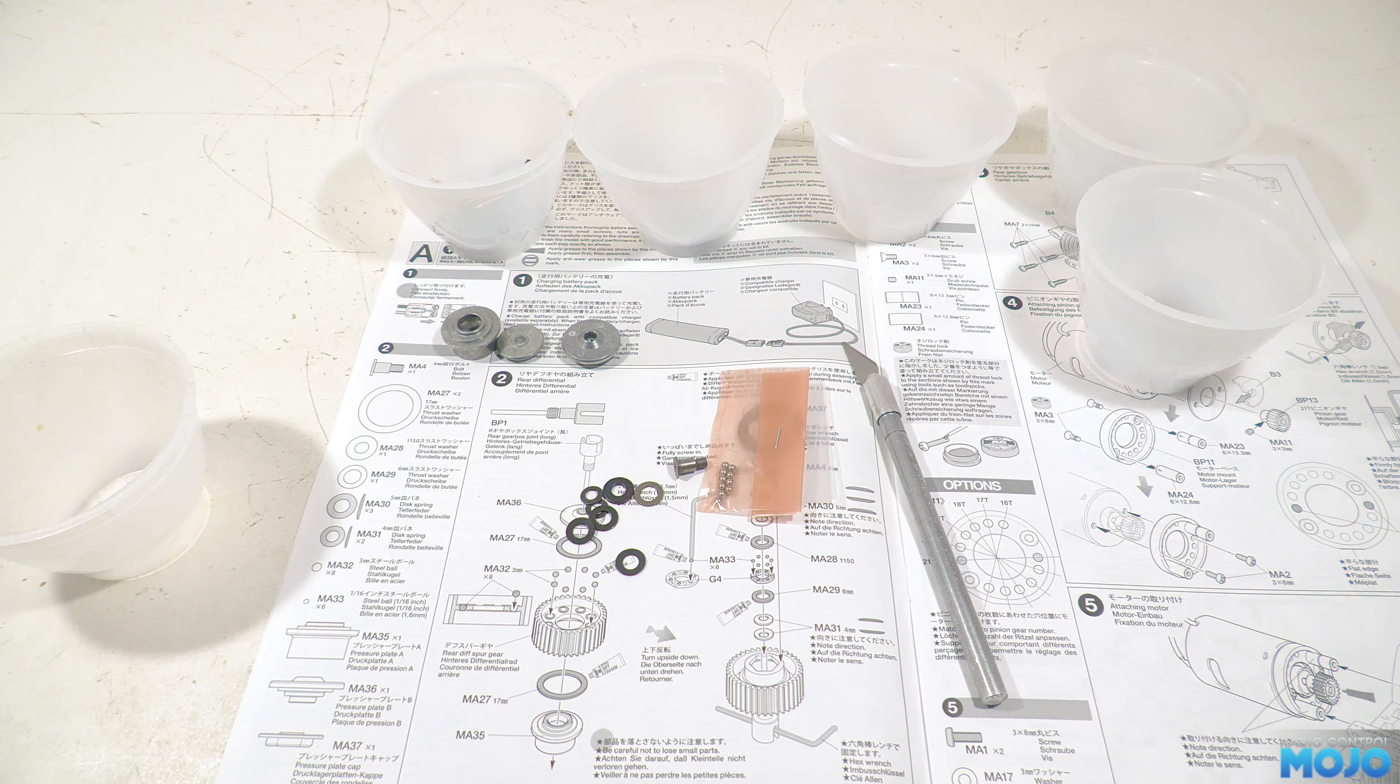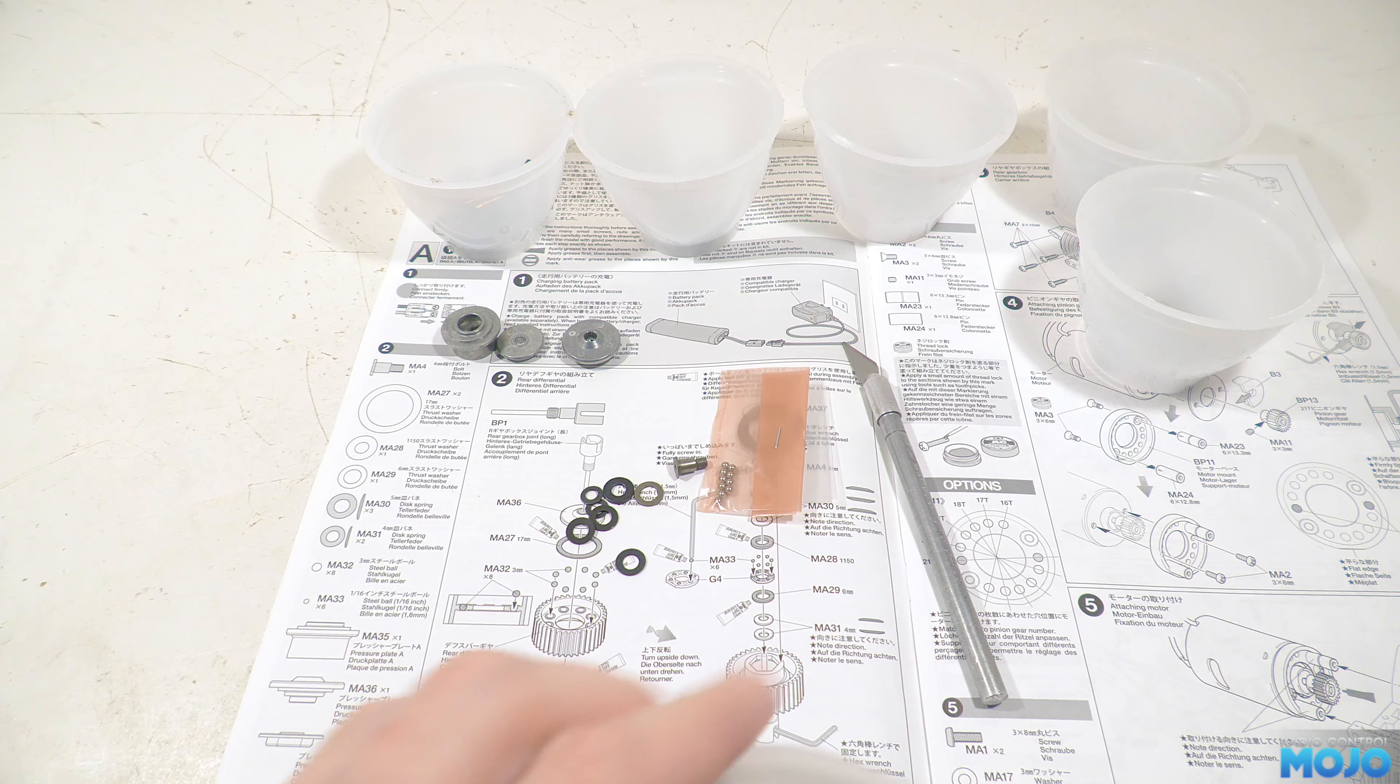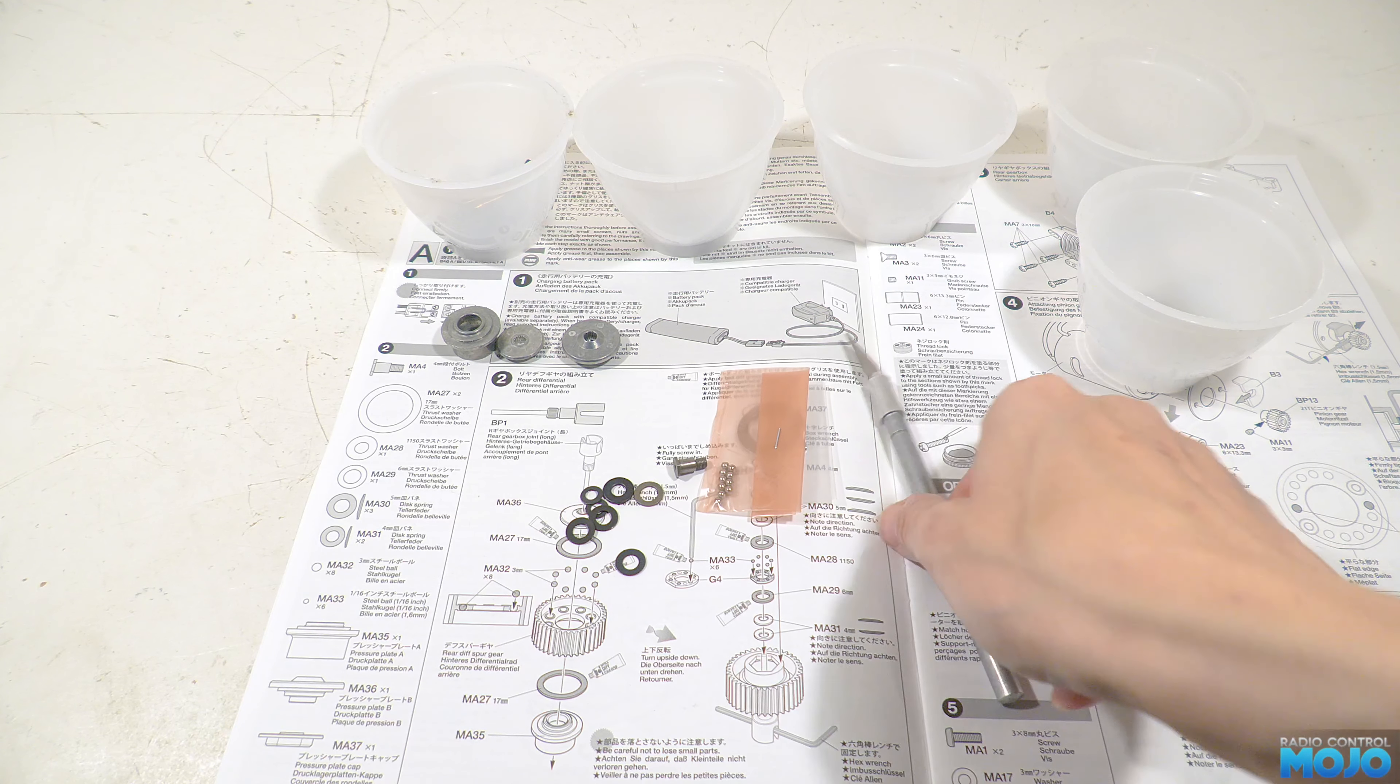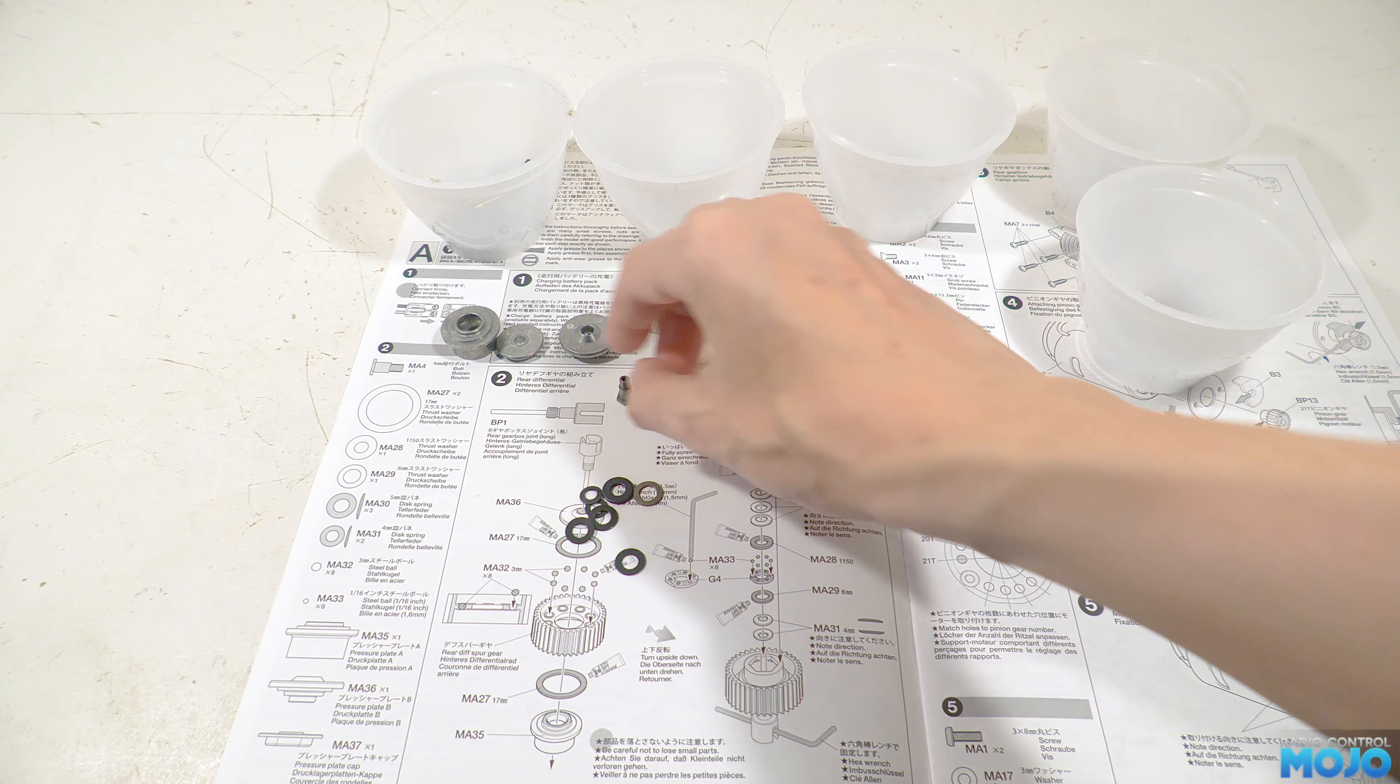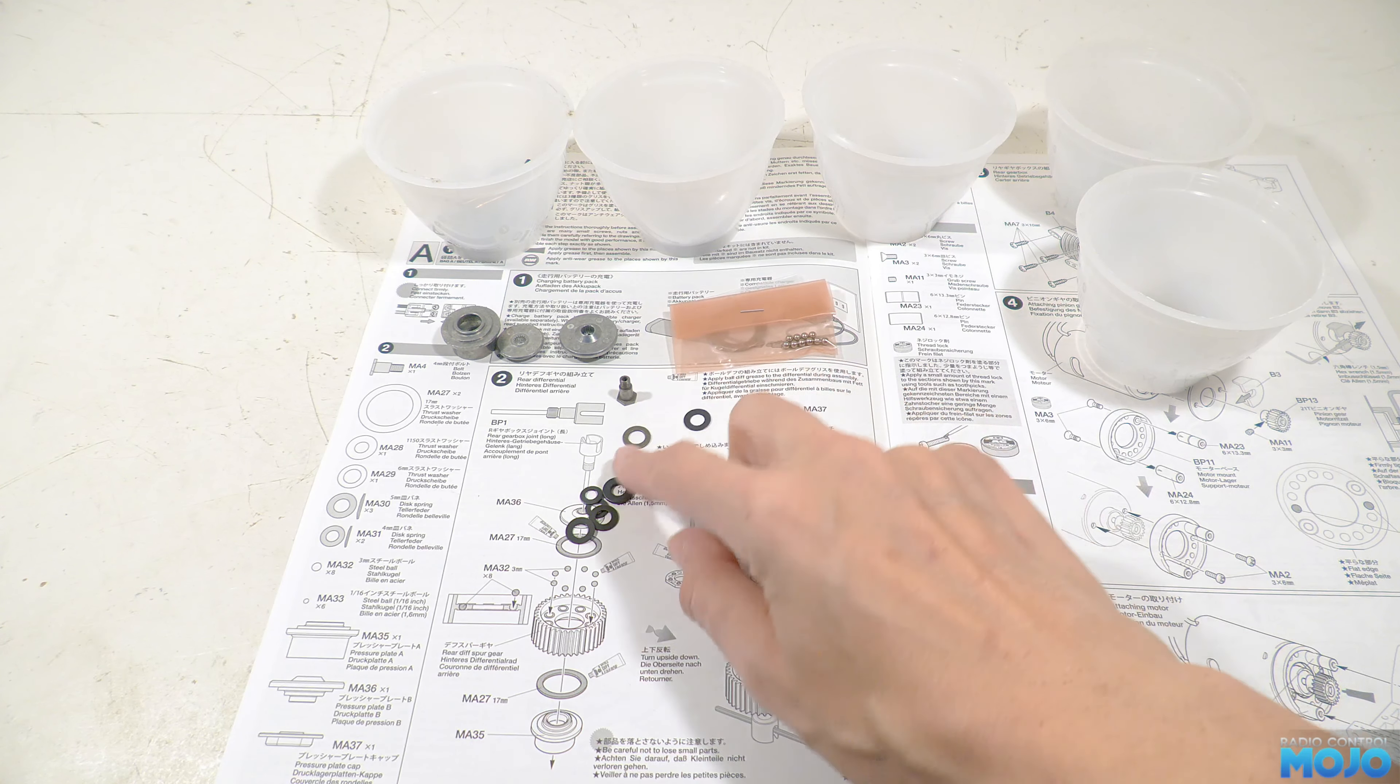Next we'll unpack the ball diff bag and lay out all the bits so they're ready to go. And I think we can call this the official start of step two. So here we go, step two, the ball diff.